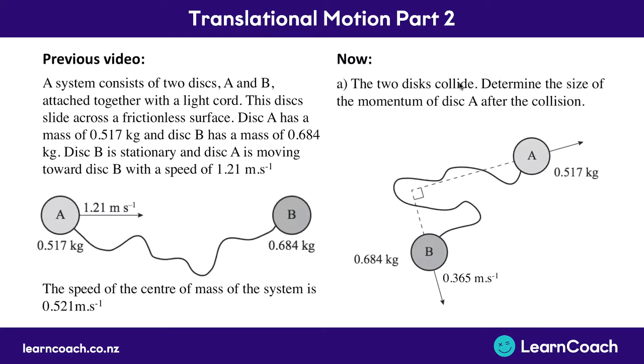Now we need to determine the size and the momentum of disk A after that collision, and here we've got a velocity for disk B which is 0.365 meters per second. The other thing we know is that the velocity of the center of mass, which is the combined system, is 0.521 meters per second, what we calculated last time.